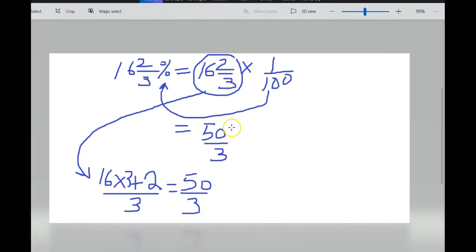This gives us 50 over 300. You can obviously do this, take a 0 out, 5 over 30. If we divide by 5 then we get 1 over 6. And this is our simplified fraction. So 16 and 2 thirds percent is equal to 1 sixth.